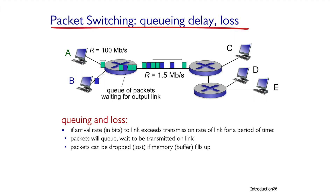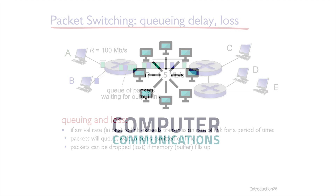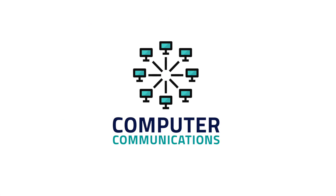In this unit we started looking into the third part of the internet, the network core. We estimated the time it takes to transmit a message from the transmitting to the receiving hosts and understood a few important issues occurring inside the routers.